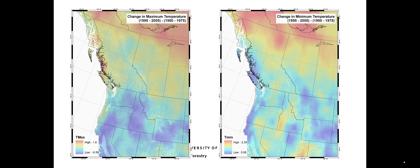Here we can see from Climate WNA the climate differences we expect and are seeing over the Pacific Northwest. This shows changes in maximum and minimum temperature from the long-term mean defined as 1950 to 1975, compared to the recent decade of 1995 to 2005. Temperatures are changing and we're seeing sites getting warmer, especially in the north, although there are pockets of fine-scale variability. Critically, minimum temperature is increasing faster than maximum temperature, meaning many diseases and pests that are normally killed off by very cold temperatures are surviving more often.